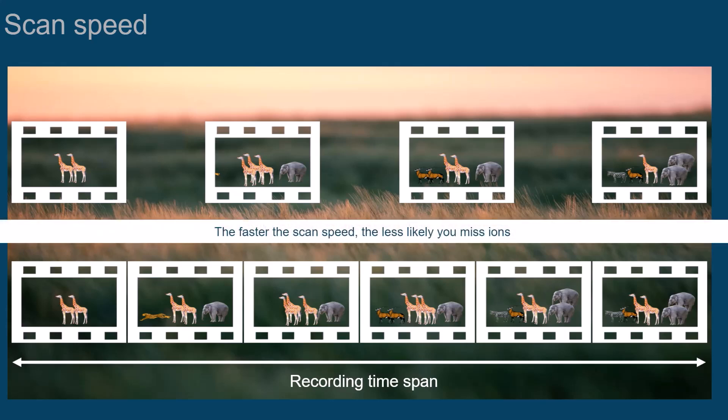The faster the scan speed of a mass spectrometer, the less likely you are to miss ions that entered the mass spectrometer but were not recorded. Did you notice that in this example you would be missing the cheetah if you were photographing at a slower speed?